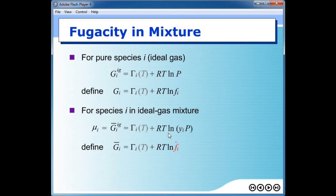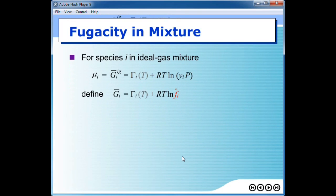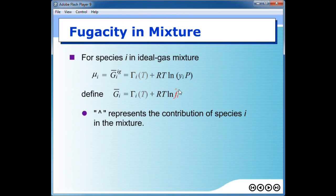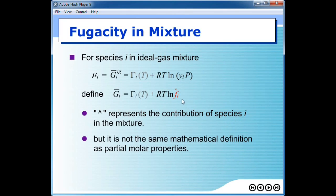We define something similar but for the mixture. The partial molar Gibbs free energy of a mixture that is not an ideal gas can be calculated in the same form, only we change the partial pressure into fugacity. Note that G_i now has a cap on top. The cap represents that species I is now part of the mixture, and this is not the same as partial molar properties — the cap is not defined as partial molar properties. It is simply a symbol to say that our system is a mixture.